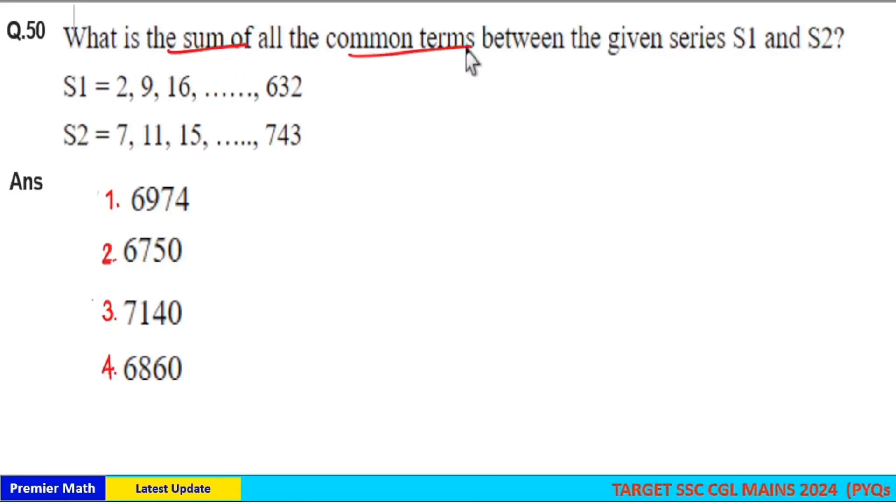What is the sum of all the common terms between the given series S1 and S2? 2 plus 7 is 9, 9 plus 7 is 16. Here difference is 7. 7 plus 4 is 11, 11 plus 4 is 15. Difference here is 4.